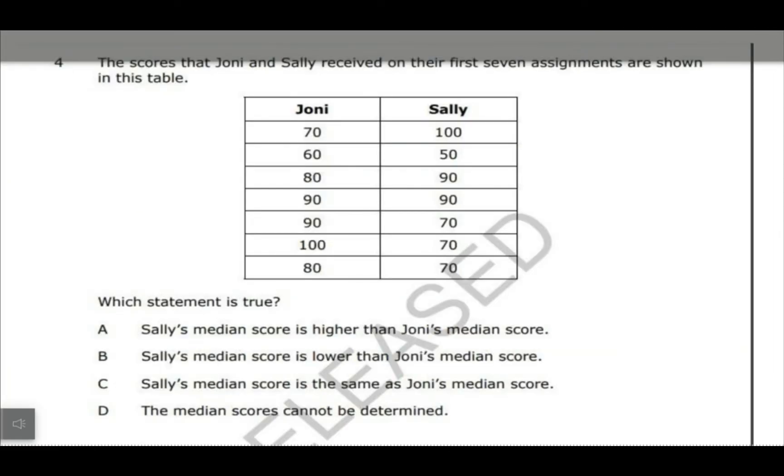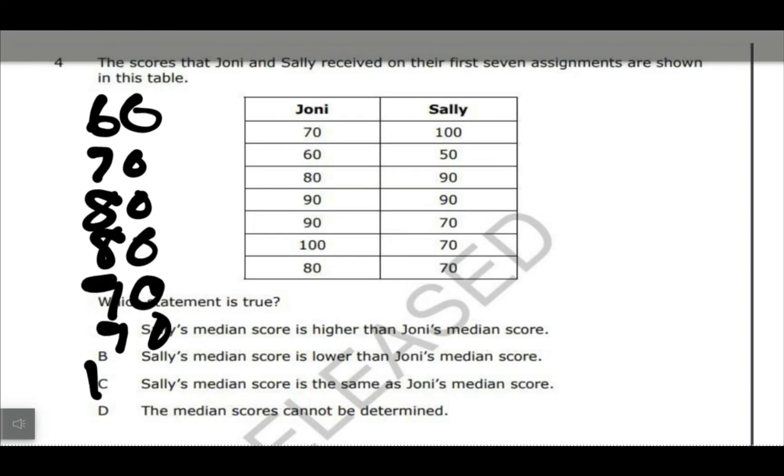Number four, we haven't gone over this year, but this is something that you should have done in sixth grade. It's talking about the median score, which one is basically higher. Remember that for the median, I want to order them from least to greatest, and they would say two 90s and 100. So my median just means my middle number. So in this case, we have one, two, three, four, five, six, seven, so there will be an exact middle number, which would be this one right here. So for Johnny, hers is 80.